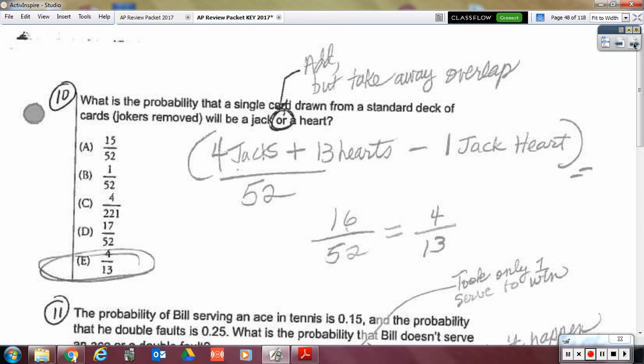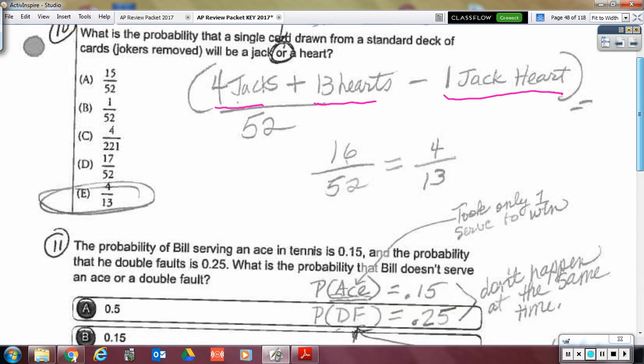Okay, here we go. So given a heart or a jack. So that's the probability of a jack plus the probability of the heart minus the overlap. There was one jack heart. So 16 over 52 was 4 thirteenths.